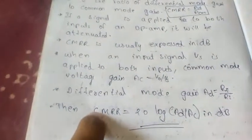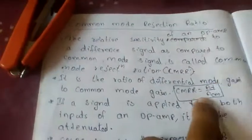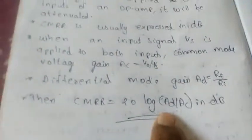The common mode rejection ratio in decibels is given by 20 log(AD/ACM) in decibels. This is the value of CMRR in decibels, whereas AD/ACM is the value of CMRR not in decibels. This is how CMRR is measured.